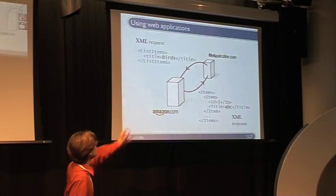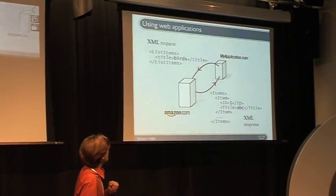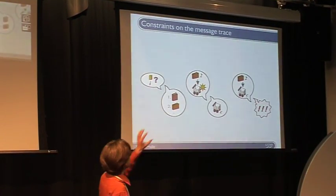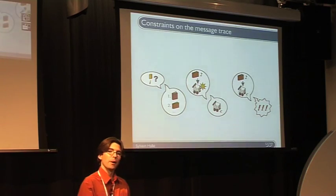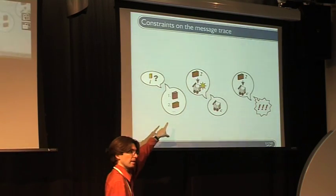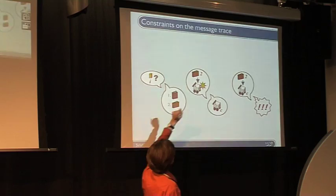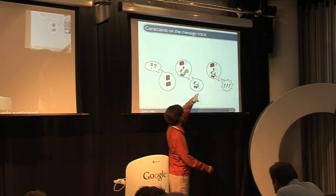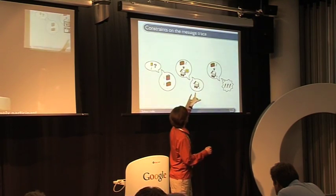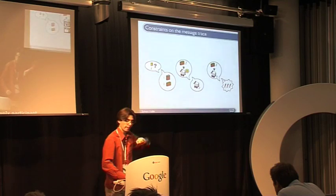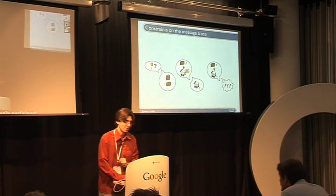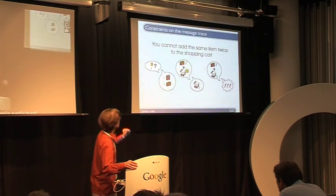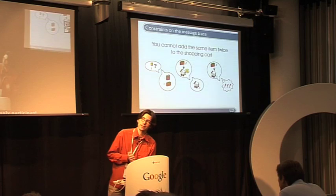When you interact with a web service, there are constraints you have to follow to have a valid interaction. Here you have an example of five different messages where you ask for some item, get the answer back, create a new shopping cart with some items inside, get a cart ID response, and then try to add one more item — and the application replies with an error message.